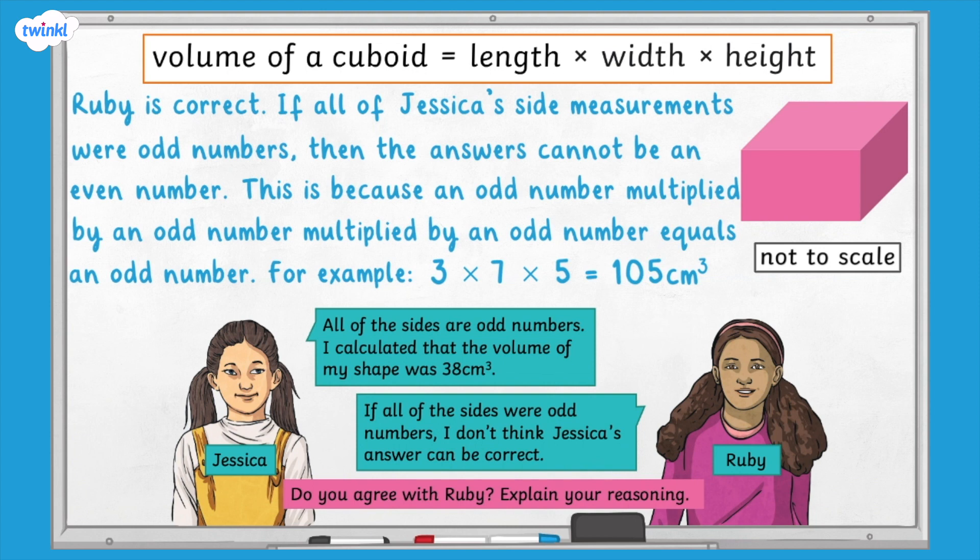For example, 3 multiplied by 7 multiplied by 5 equals 105 cubic centimetres.